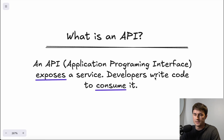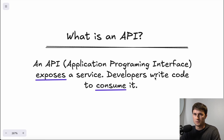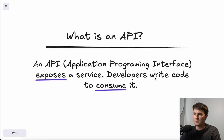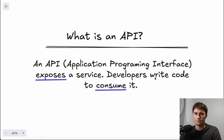First up, what is an API? Starting with the technical definition: an API, or application programming interface, exposes a service while developers write code to consume it. APIs are used wherever you need an answer from a particular request. Use cases include creating a user, signing up a user to a newsletter, creating a payment, or accessing an external service. In a nutshell, APIs are a way to communicate with external services, and to do so we need to write some code.